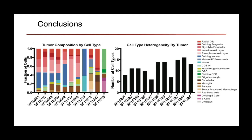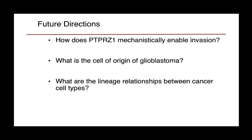Altogether, this shows that our ability to use cell type annotations from development and the adult human gives us opportunities to identify the heterogeneous tumor composition of glioblastoma, and to see that there are a large number of cell types within each tumor that may arise from a heterogeneity of glioblastoma stem cells. Moving forward, I'm interested in pursuing how PTPRZ1 mechanistically enables invasion, what the cell of origin for glioblastoma is, and what the lineage relationship between cancer cell types within the tumor is. Is there a single cell of origin, or is there a tumor niche that enables the generation of these diverse cell types that would not traditionally be lineage-correlated in a pure developmental context?